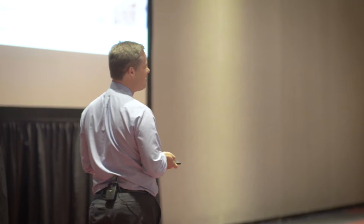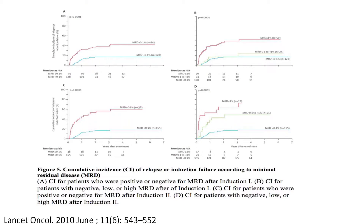We've known about MRD for a long time. This paper from 2010 showed the significance of MRD, often outperforming all genomic classifications. Because what is MRD really? It's basically that you gave the patient a therapy, and there's a clone that is resistant to that therapy. Through evolution, that clone is going to increase and eventually cause most of the mortality.